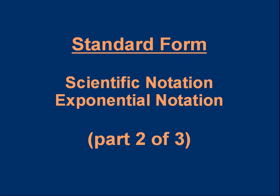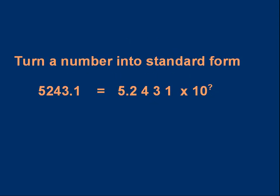Let's start with a simple example. Supposing we want to turn 5243.1 into standard form. The first step is to write down the mantissa. You know from part one the mantissa must be less than 10 and one or more — it's got to be in that range. So we can say straight away that the mantissa is going to be 5.2431, and it's going to be multiplied by 10 to some power.